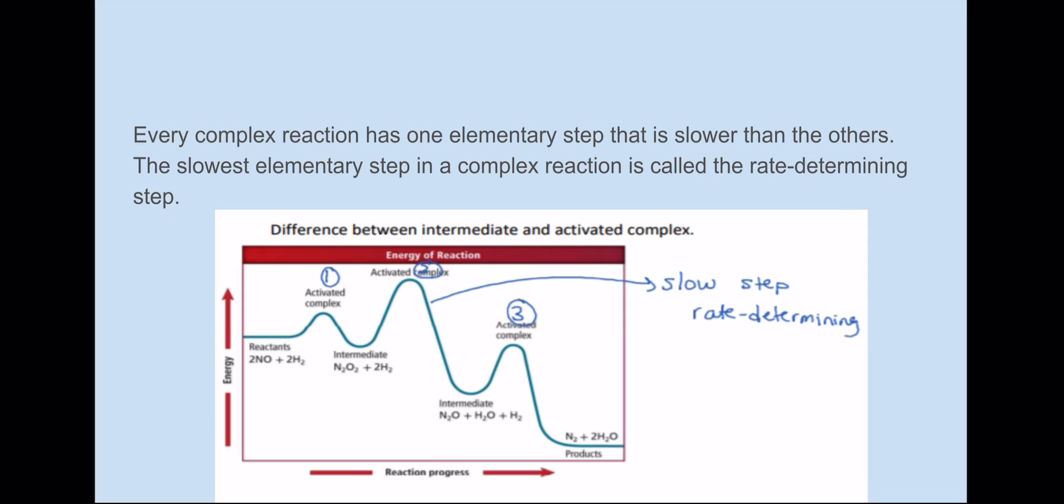So first off, we have the reactants, and then at the very end, you have the products. And then here you have to determine which step is the slowest step or the rate determining step. How do you know? Well, you look at the activation energy. Which one has the highest activation energy? Number two, the one in the middle. And the one with the highest activation energy has the slowest rate because they are inversely proportional. So when the activation energy increases, the rate decreases.